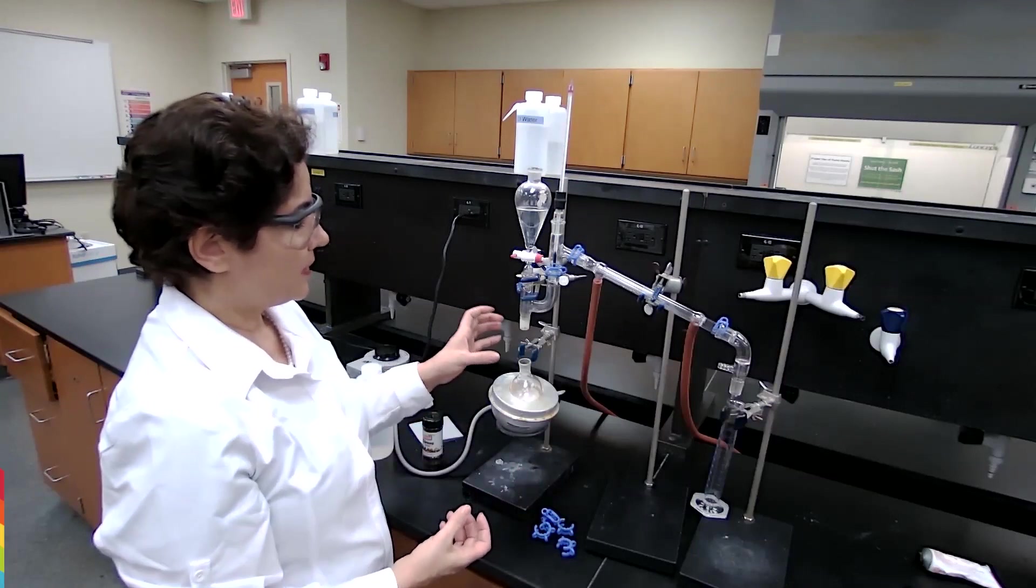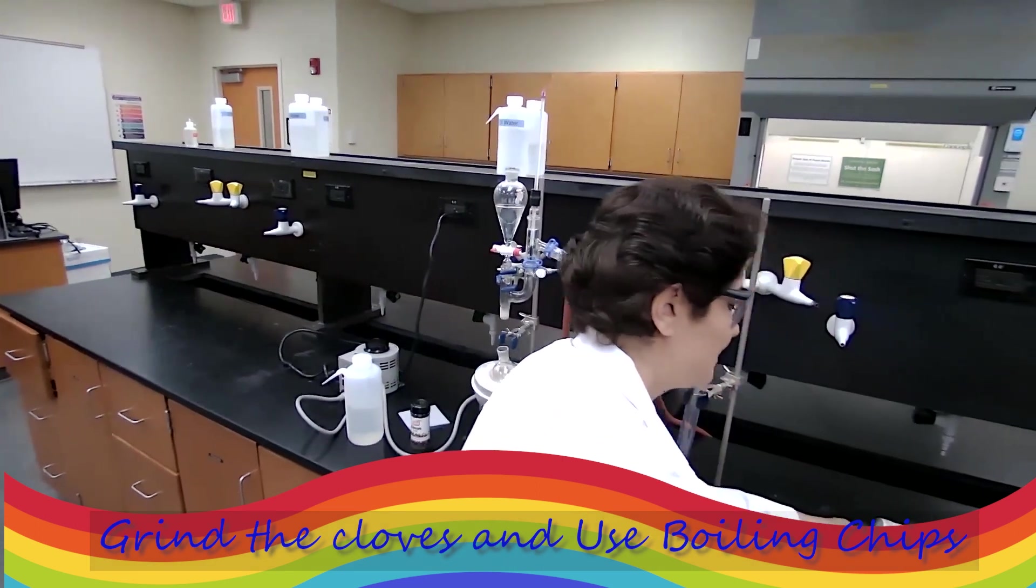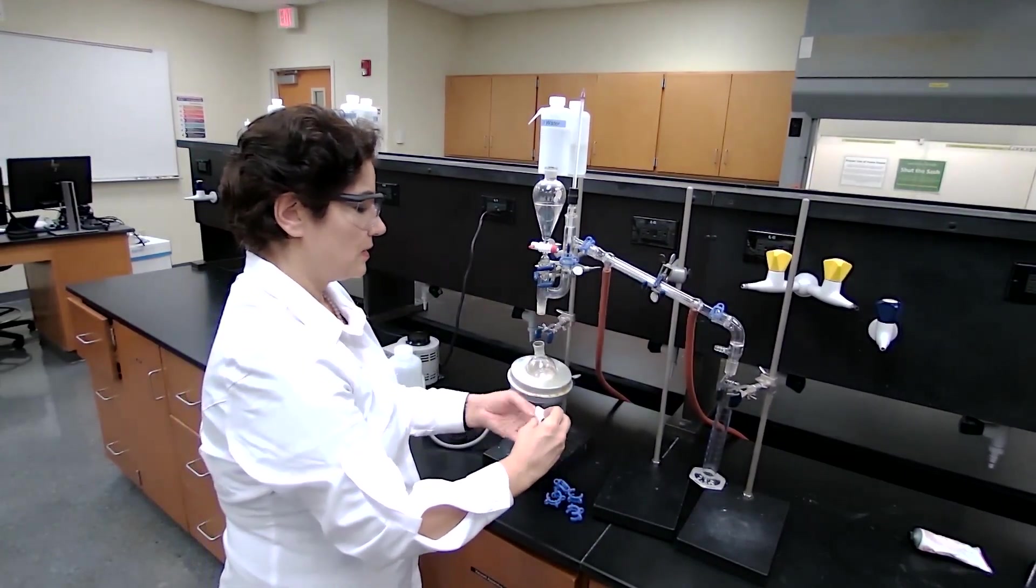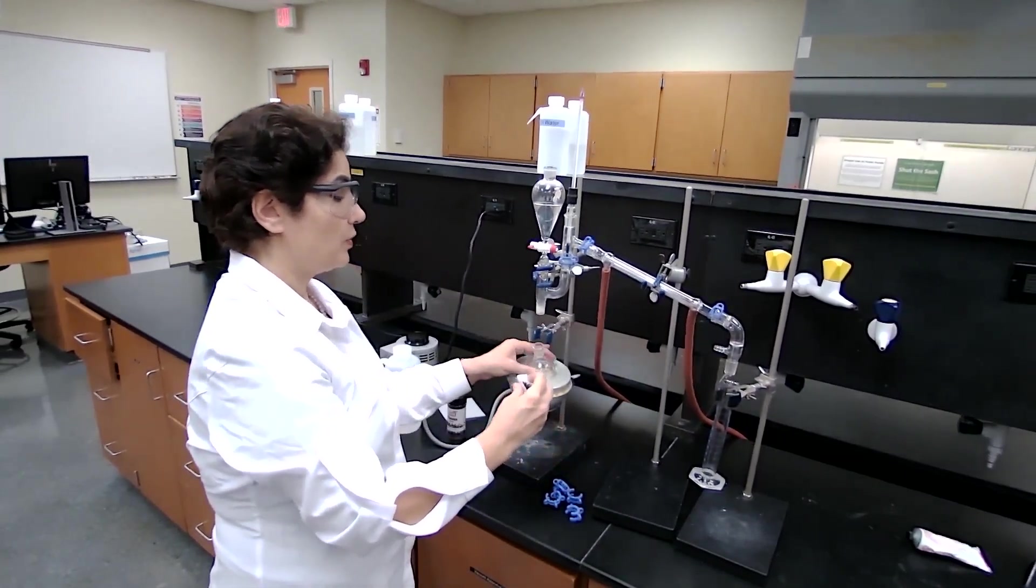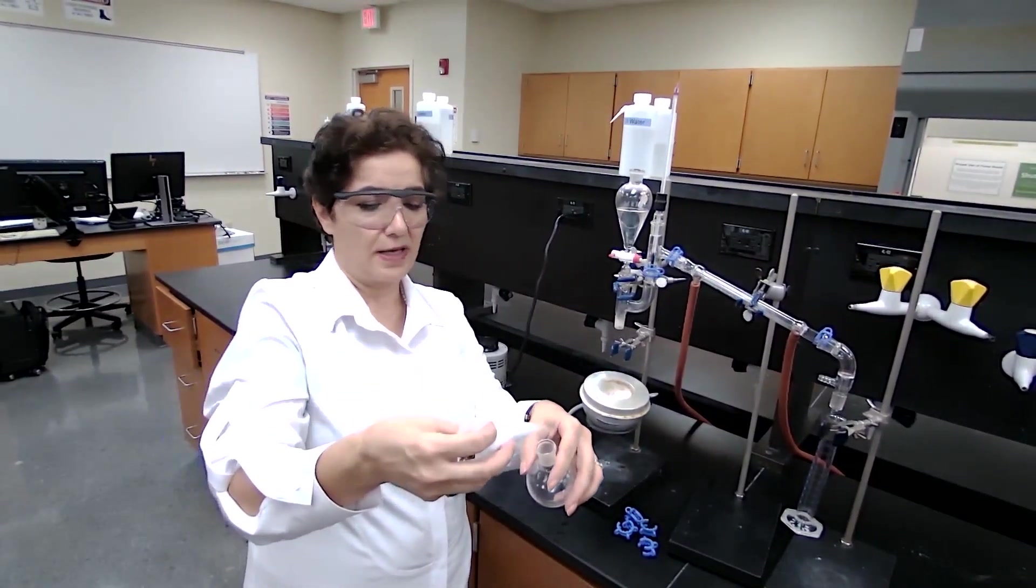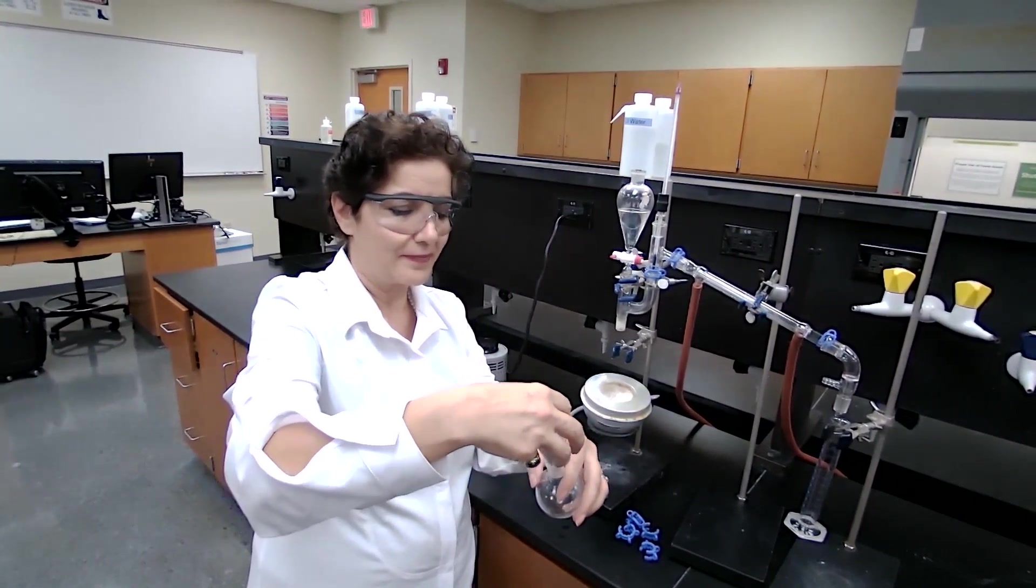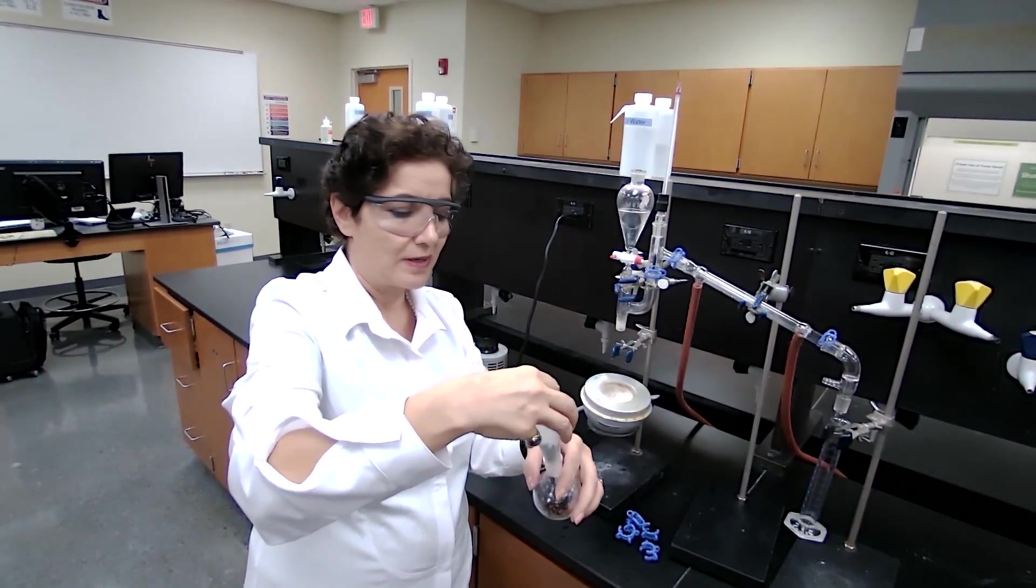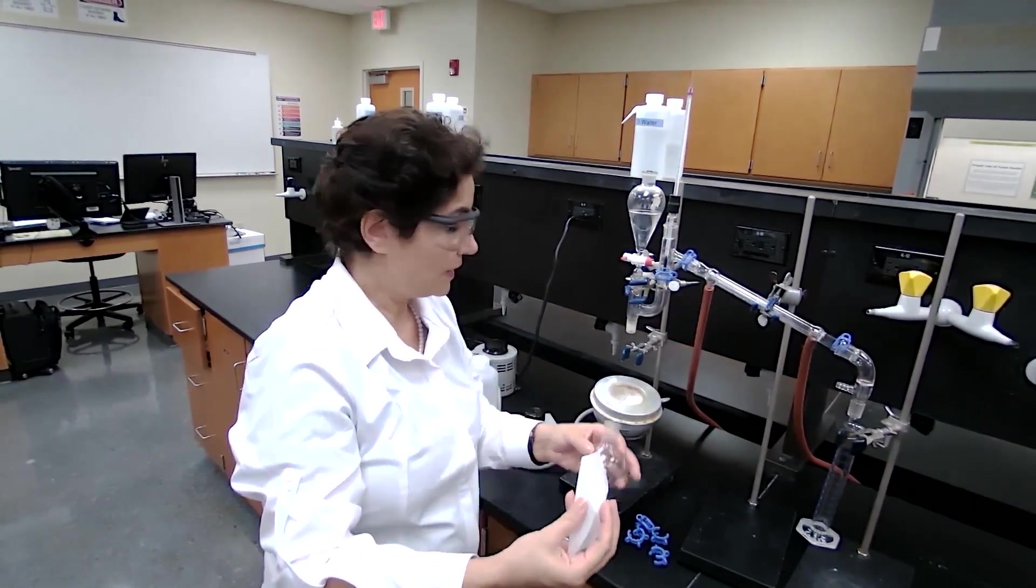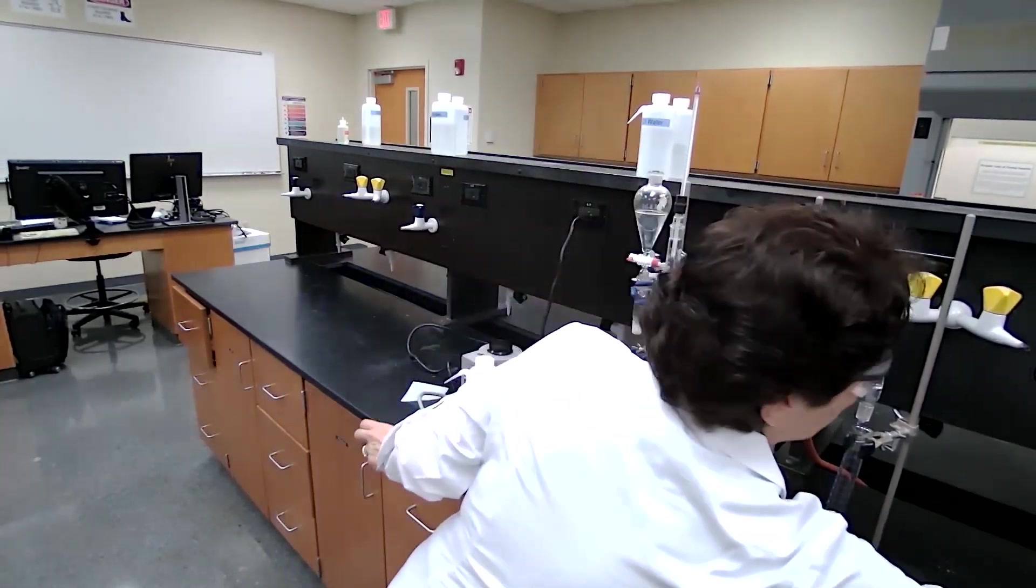I am going to add the sample. 5 grams of cloves has been measured. So I'm going to add that to the boiling flask. I usually use a funnel, I usually use vane paper and make a funnel with that.